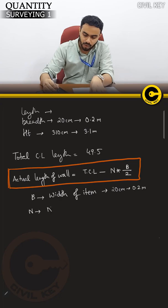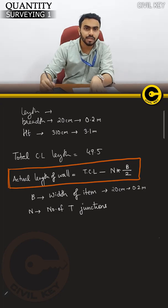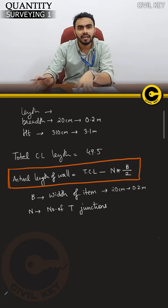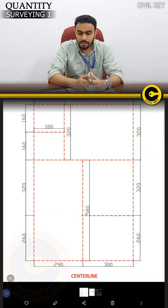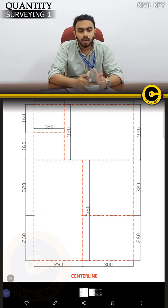And n is the number of T-junctions. Looking at the plan, we count the T-junctions in the same way.